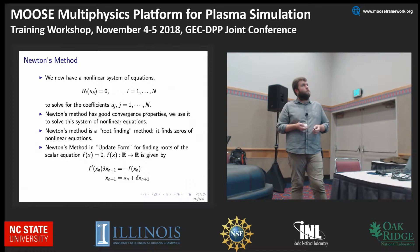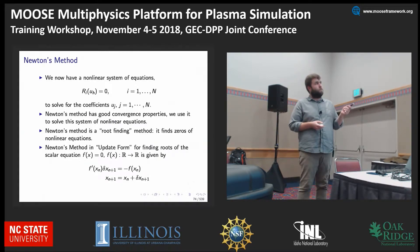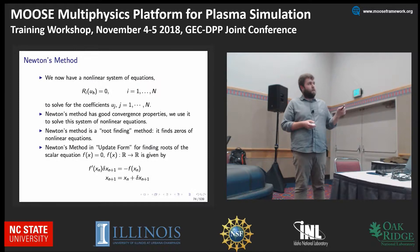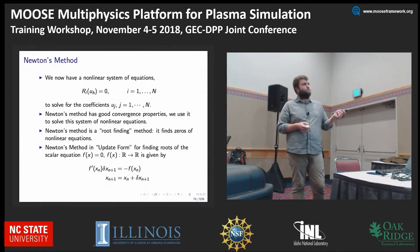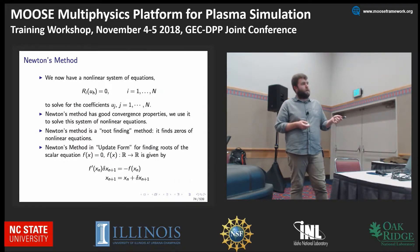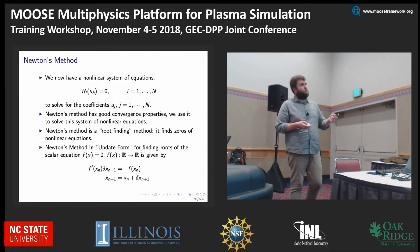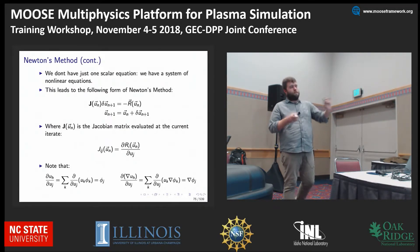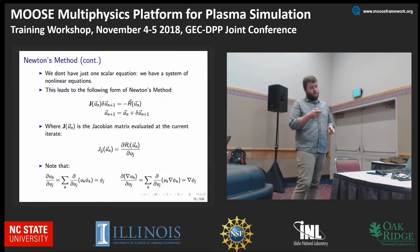We want to solve for those coefficients where the sum from i equals 1 through n equals zero. We use Newton's method to find the roots of this equation. For a scalar equation f(x), we're updating our solution. We don't have one scalar equation here — we have quite a few. This leads to a form where the Jacobian matrix comes back in, evaluated at our current iterate.